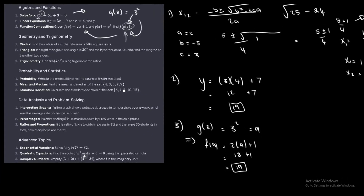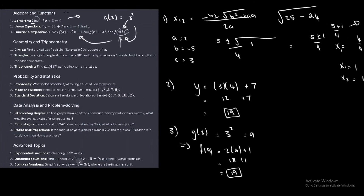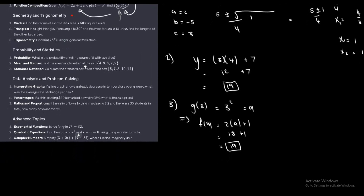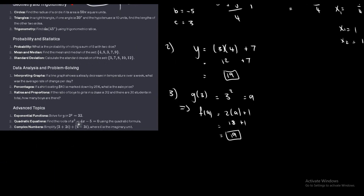Those were some basic algebra and function questions. Now moving on to geometry and trigonometry — I'll use a different color for these. Find the radius of a circle if the area equals 50π square units. The area of a circle is π times r squared, so we can immediately identify that r squared equals 50.